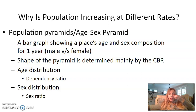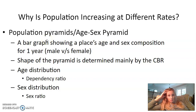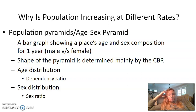The shape of the pyramid is determined mainly by the crude birth rate. The crude birth rate does determine the shape of that pyramid, because the youngest part of the population is at the bottom. It goes up in five-year cohort groups, with those aged zero to five at the very bottom. The crude birth rate represented at the bottom dictates what the shape of the pyramid is going to look like.